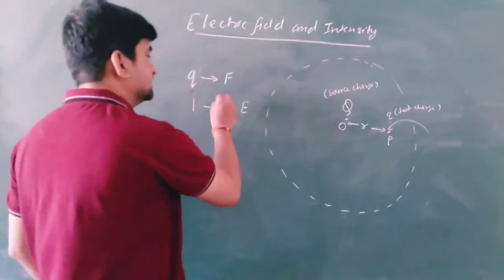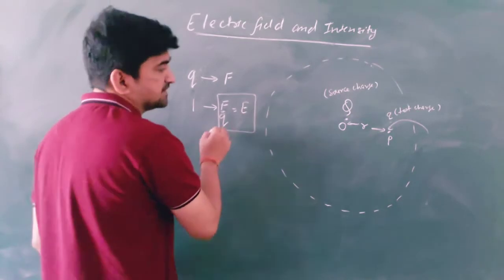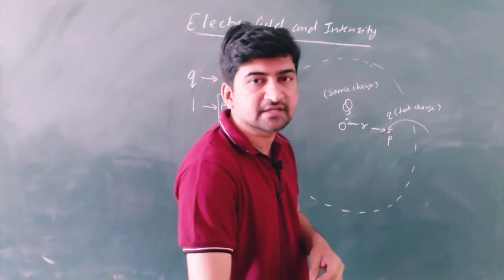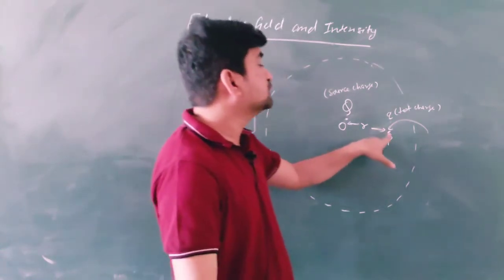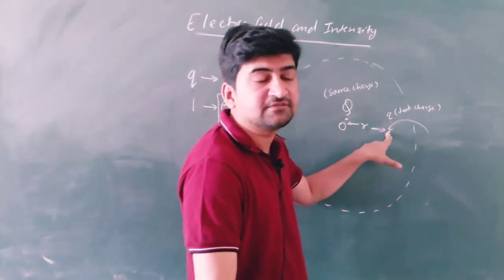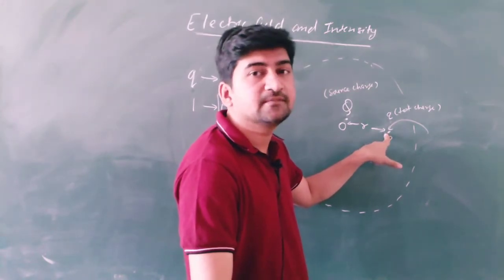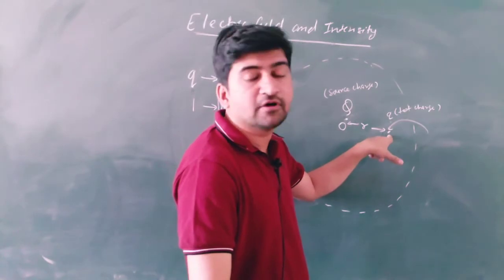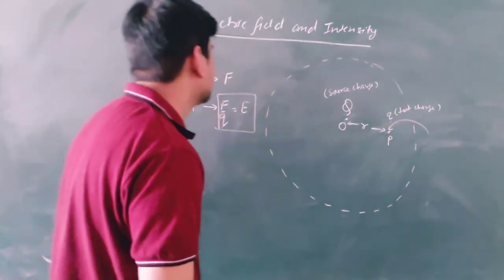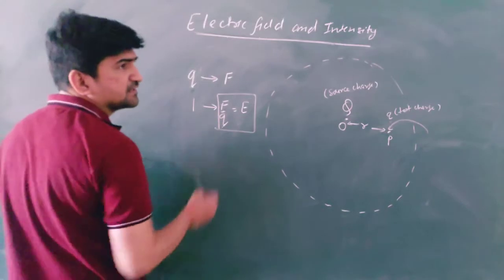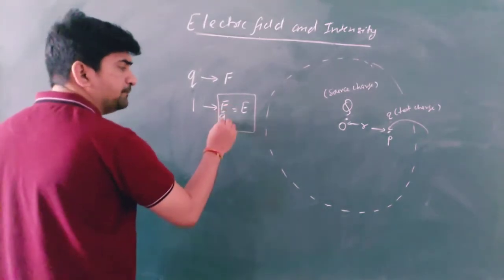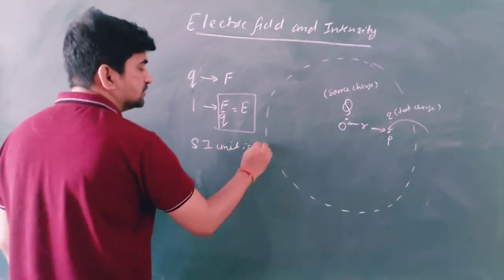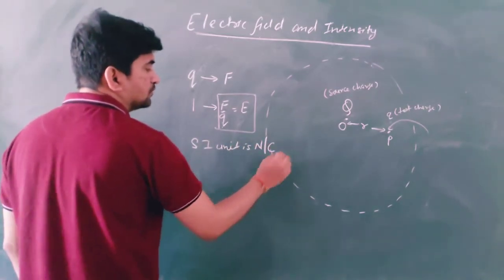E is equal to F divided by Q — that is the definition of electric field intensity. Any force experienced by the unit positive test charge placed at a given point is the electrical intensity at that point in an electric field. The SI unit of electric field intensity is Newton per Coulomb.